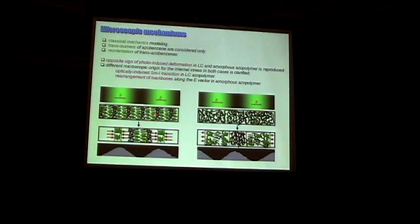But still, it was quite enough to demonstrate that the photo-induced deformations are opposite in both systems. So for the liquid crystalline system, we have that the mass of the polymer will move toward the light. And for the amorphous system, we will see that the mass of the polymer will go away from the light. And the mechanism is different mechanisms. In one case, this is photo-induced order-disorder transition in liquid crystalline subsystem. And in other cases, this is rearrangement of the backbones in the material.